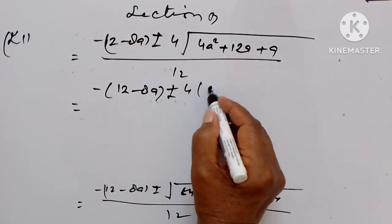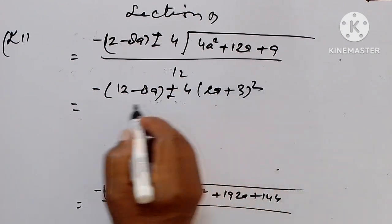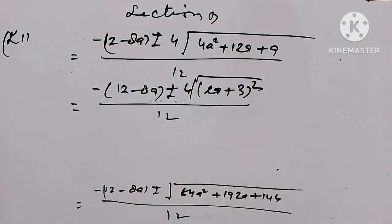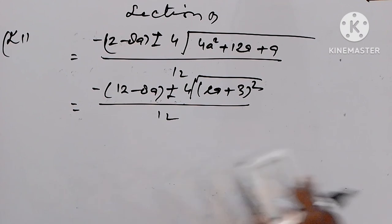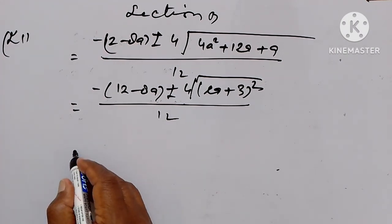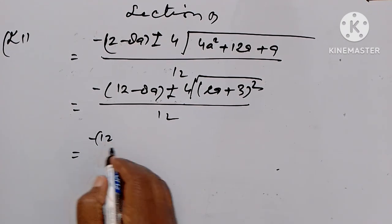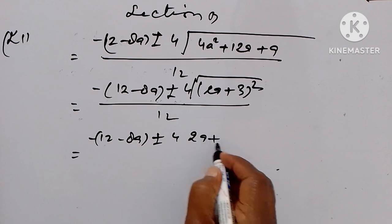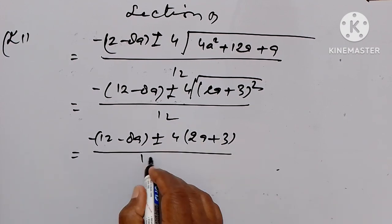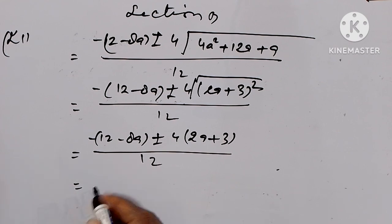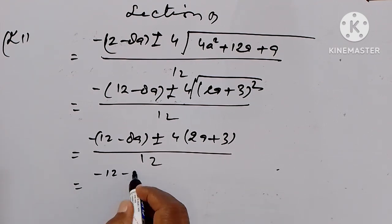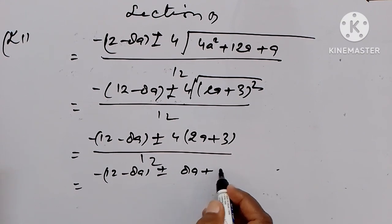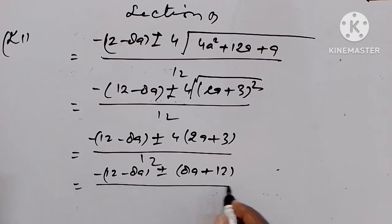All upon 12. This becomes a whole square. So we have minus (12 minus 8a) plus or minus (8a plus 12), upon 12.